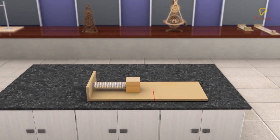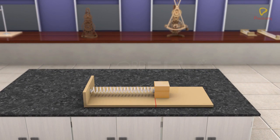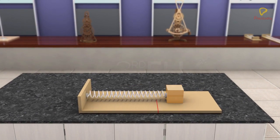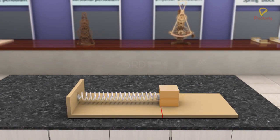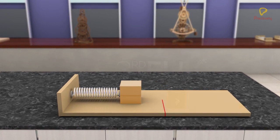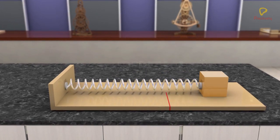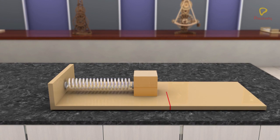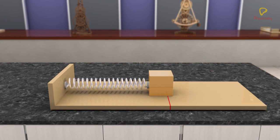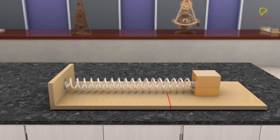Let us look at the motion of a spring block system in the absence of dissipative forces such as friction and air resistance. Consider a block lying on a horizontal frictionless table attached to a massless spring that is fixed at one end.